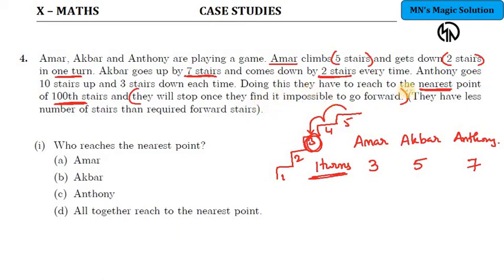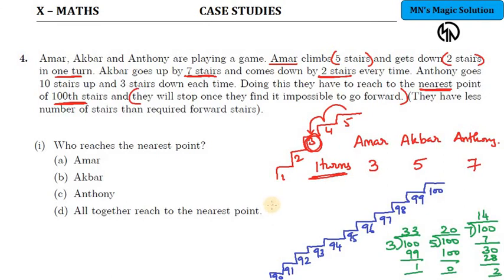And they will stop once when they find it impossible to go forward. In this particular scenario, who will reach the nearest point is the question. Here are our steps - the last set of steps up to hundred I have mentioned here.